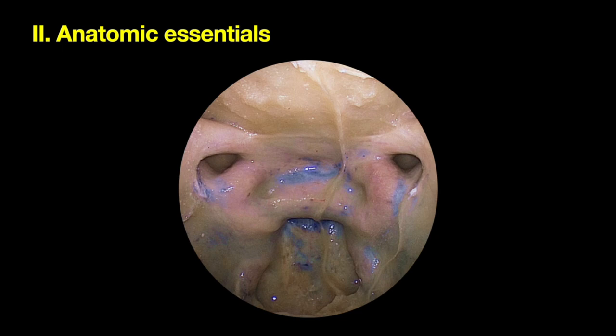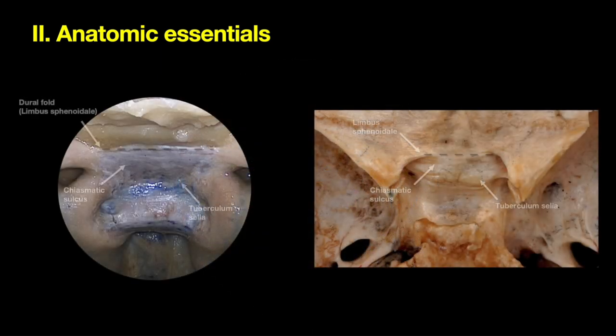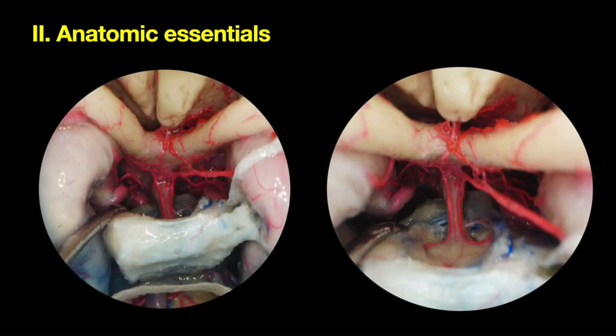These are anatomic essentials: the medial and lateral optic chiasmatic recesses, the importance of the limbus of the sphenoid, which marks the separation between the planum sphenoidale and the chiasmatic sulcus. It also marks the location of the optic canal. The anatomy of the superior hypophysial arteries and their branches is also key.